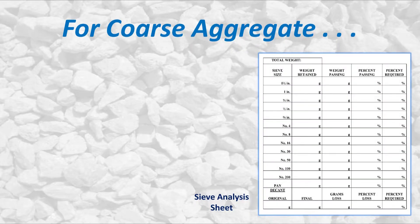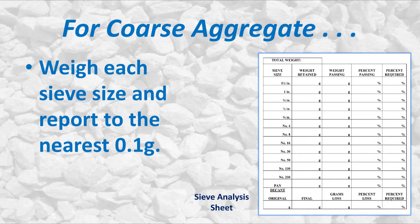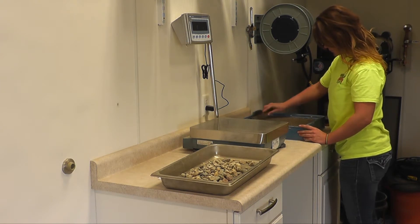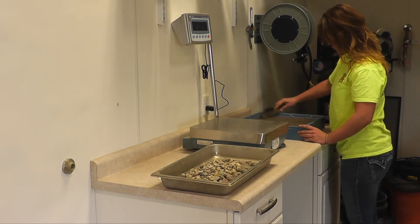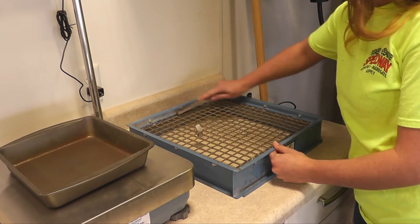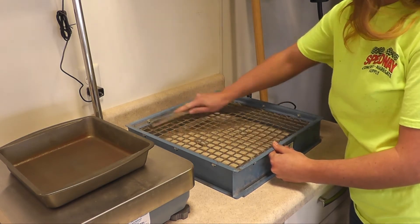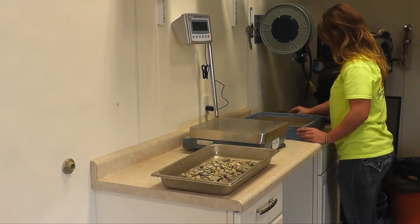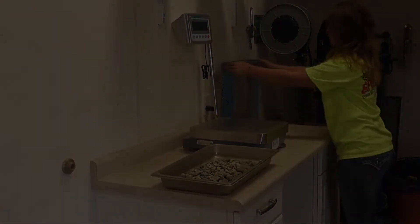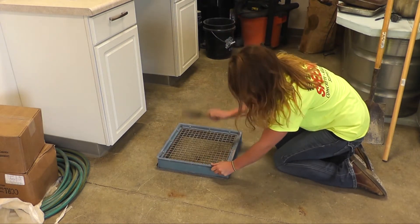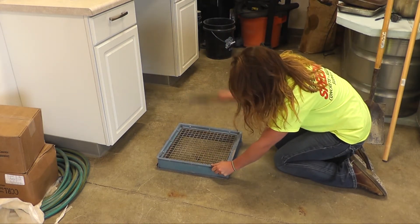For coarse aggregates, weigh each size and record each weight to the nearest 0.1 gram. Be sure to remove any aggregate trapped within the sieve openings by gently working from either or both sides with a trowel or piece of flat metal until the aggregate is freed. Banging the sieve on the floor or hitting the sieve with a hammer will damage the sieve.